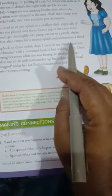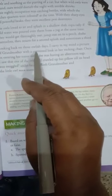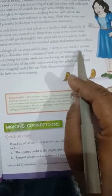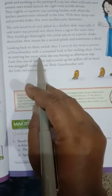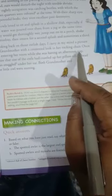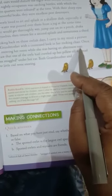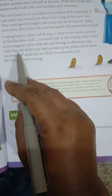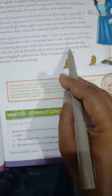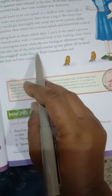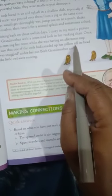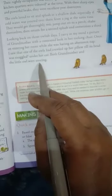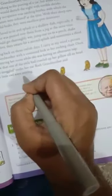Looking back on those owlish days, I carry in my mind a picture of grandmother with a contented look in a rocking chair. Once on entering her room, while she was having an afternoon nap. Nap means take a sound sleep. I saw that one of the owls had crawled up her pillow till its head was snuggled under her ears. Both grandmother and the little owl were snoring. Snoring means a fast sleep.